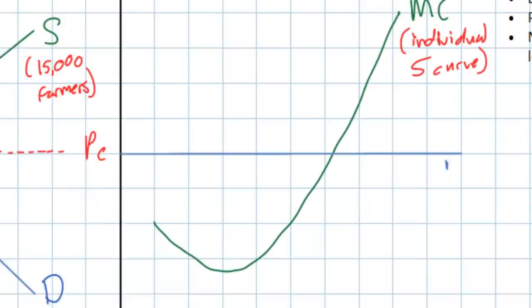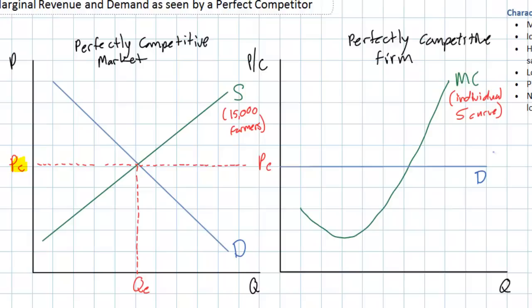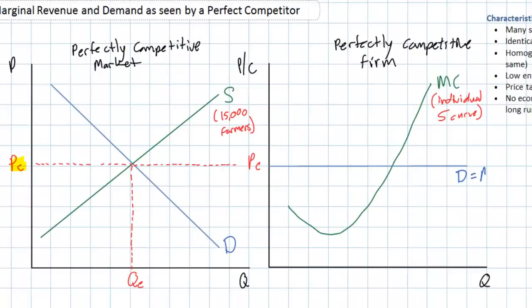So here we have an individual dairy farmer's demand curve — the demand for one individual dairy farmer's milk. It is perfectly elastic, meaning this dairy farmer has no control over the price of his milk. If he raises his price, he will sell zero liters of milk. If he lowers his price, every single buyer will want to buy from him. The price is determined by the market. This also represents the firm's marginal revenue — MR.